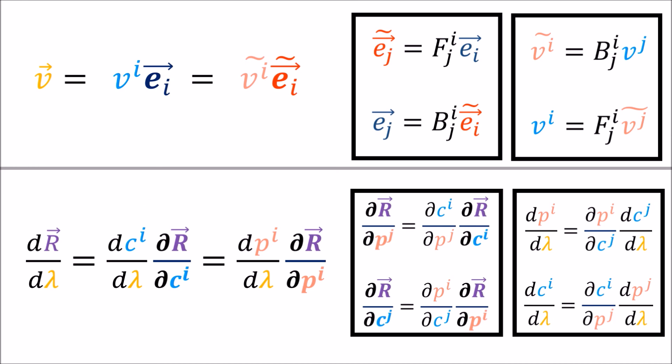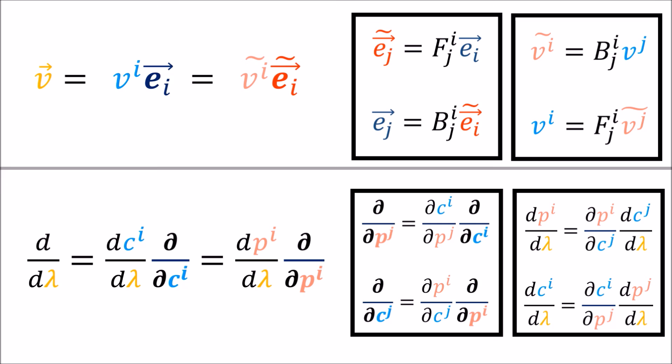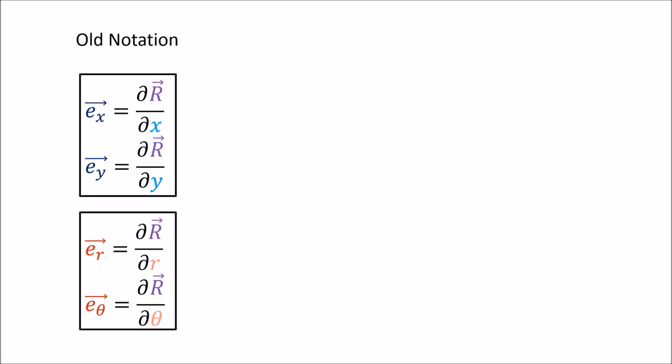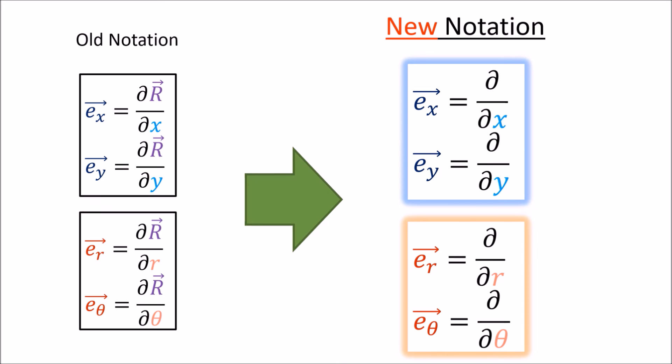There's one last thing to mention before ending this video. Looking at the formulas, the position vector capital R appears in a few of them. I'm going to remove the capital R position vector, and we're left with formulas that are still multivariable chain rules and still make sense without the position vector. We don't actually need that position vector at all. In future videos, instead of referring to these derivatives of a position vector as the basis vectors, we're going to call these partial derivative operators the basis vectors. So partial derivative operators will be considered basis vectors from now on.